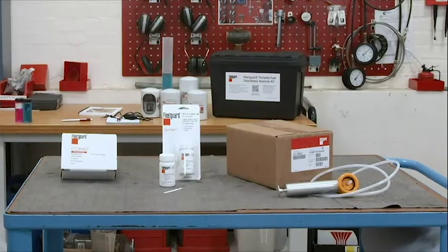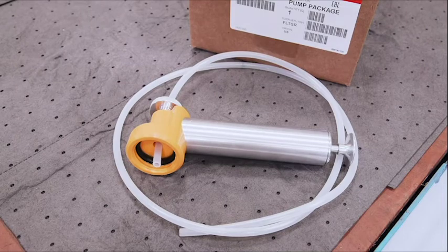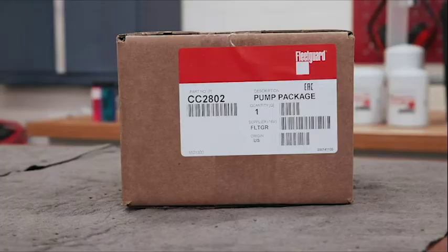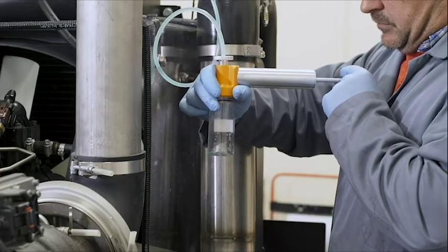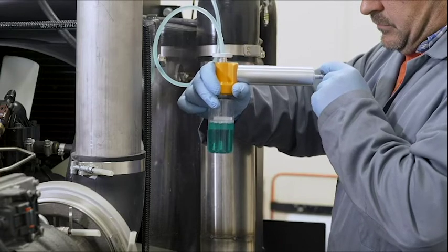The products we're going to use in this demonstration are the FleetGuard Fluid Vacuum Pump, part number CC2802, which can be used to obtain coolant samples for testing. This simple tool can also be used to extract other fluid samples for analysis, although they're not covered in this training.